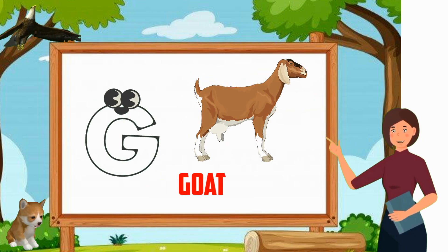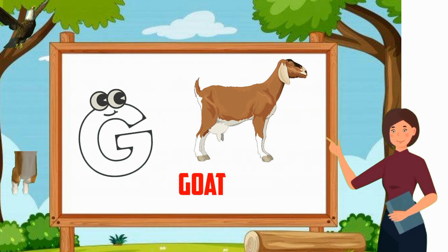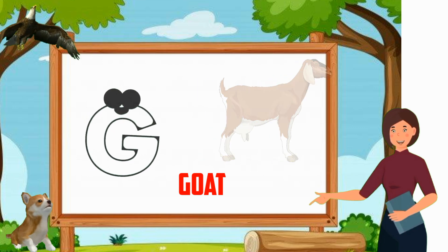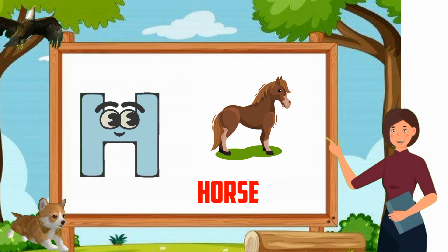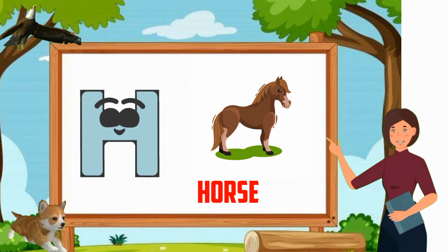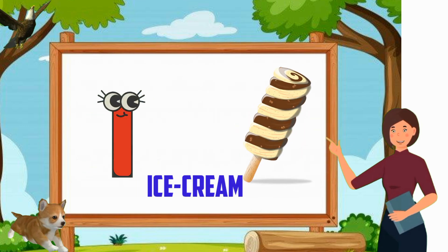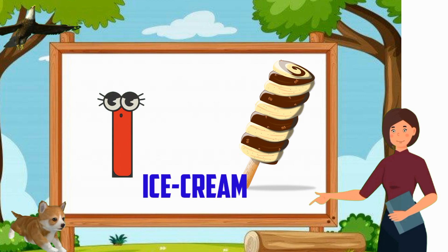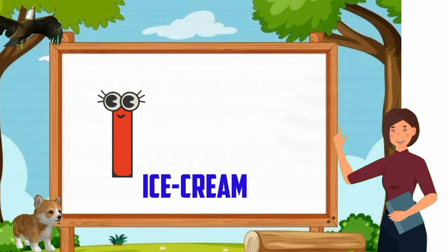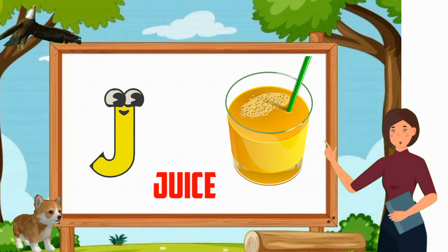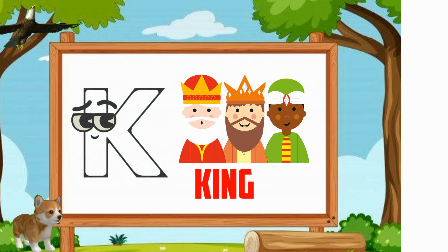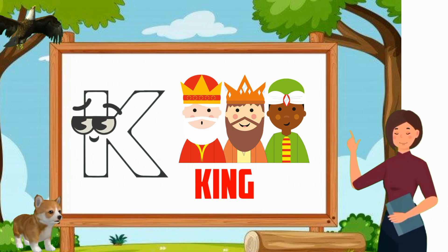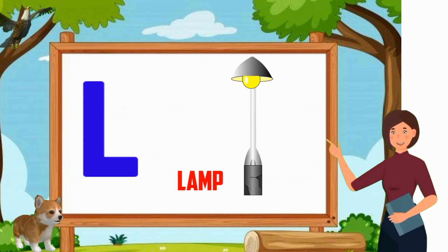G for goat. H for horse. I for ice cream. G for juice. G for king. A for lamb.